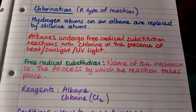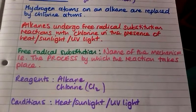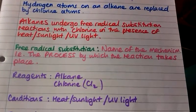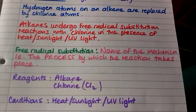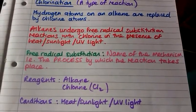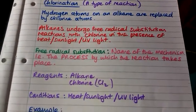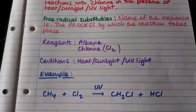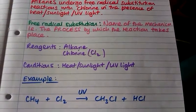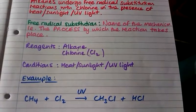So what do we need for chlorination? The reagents are an alkane and chlorine, and the conditions are heat, sunlight, or UV light just to act as an energy source to get the reaction to go. The example I'm going to go through is the reaction of methane with chlorine to form chloromethane.